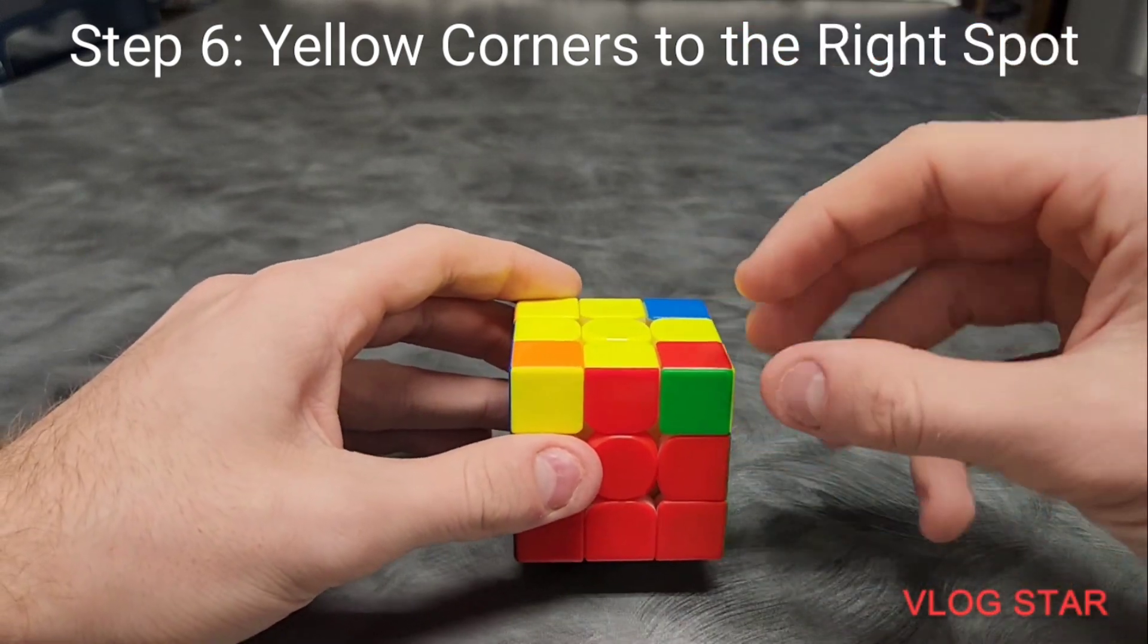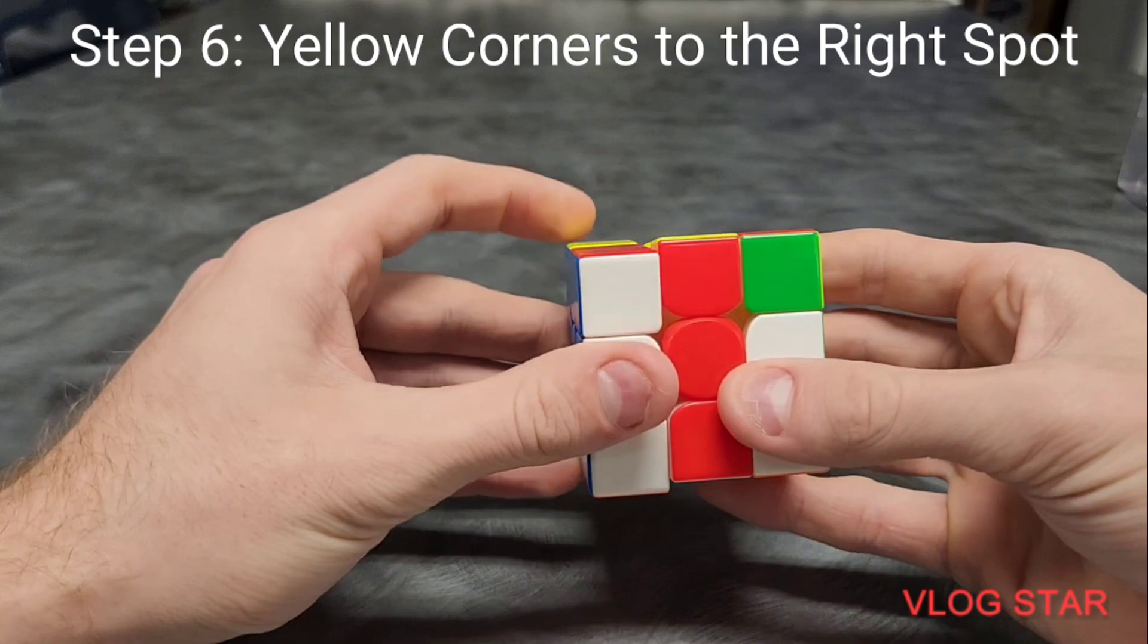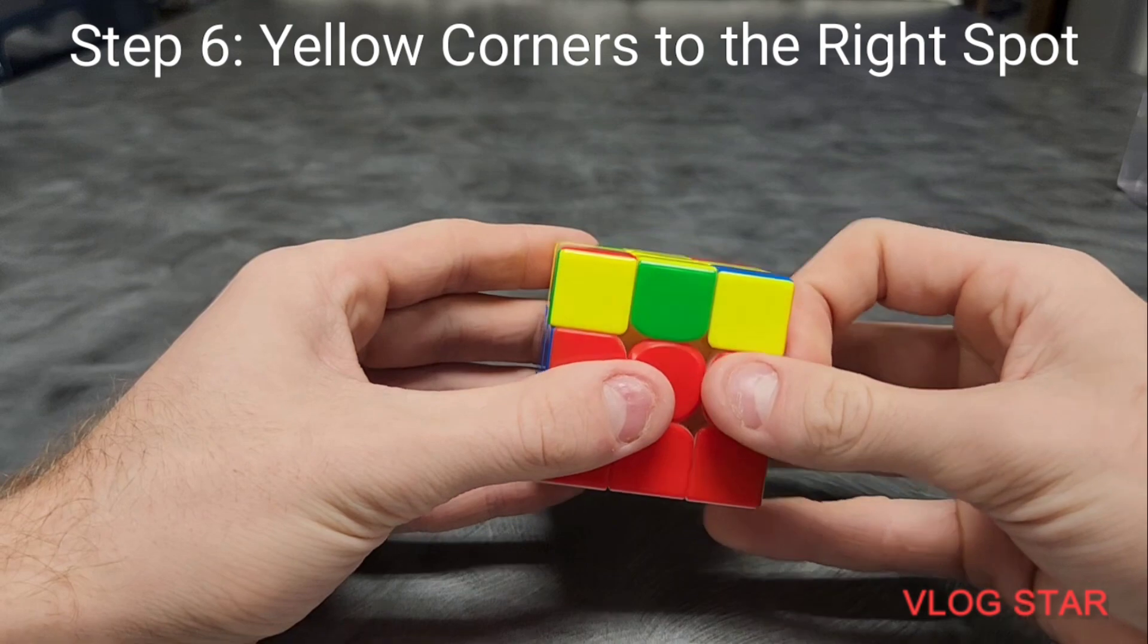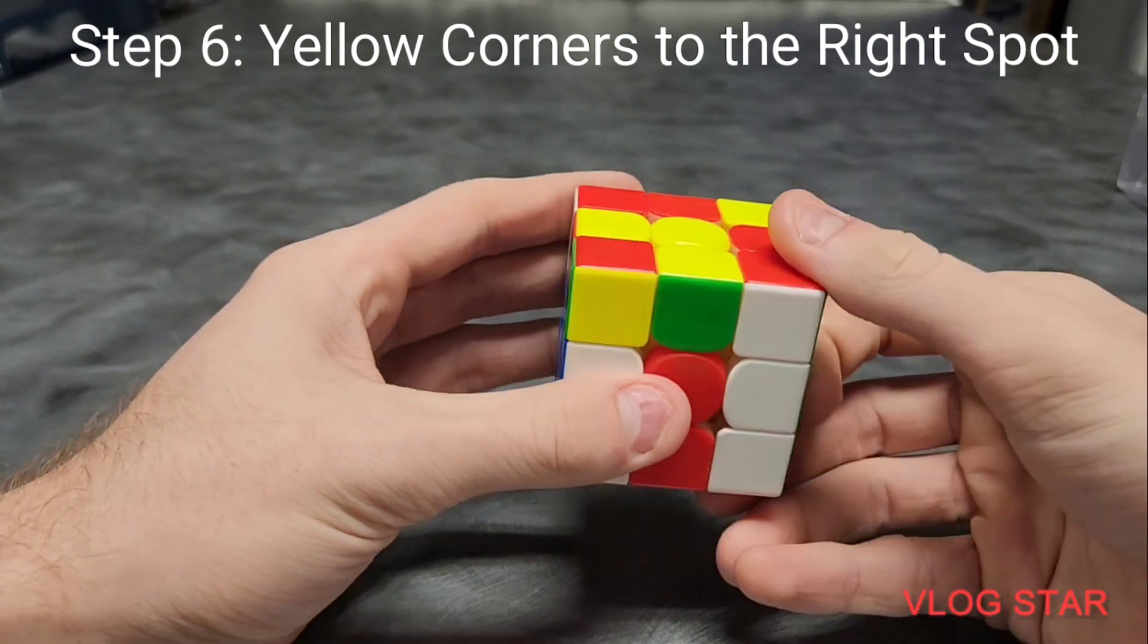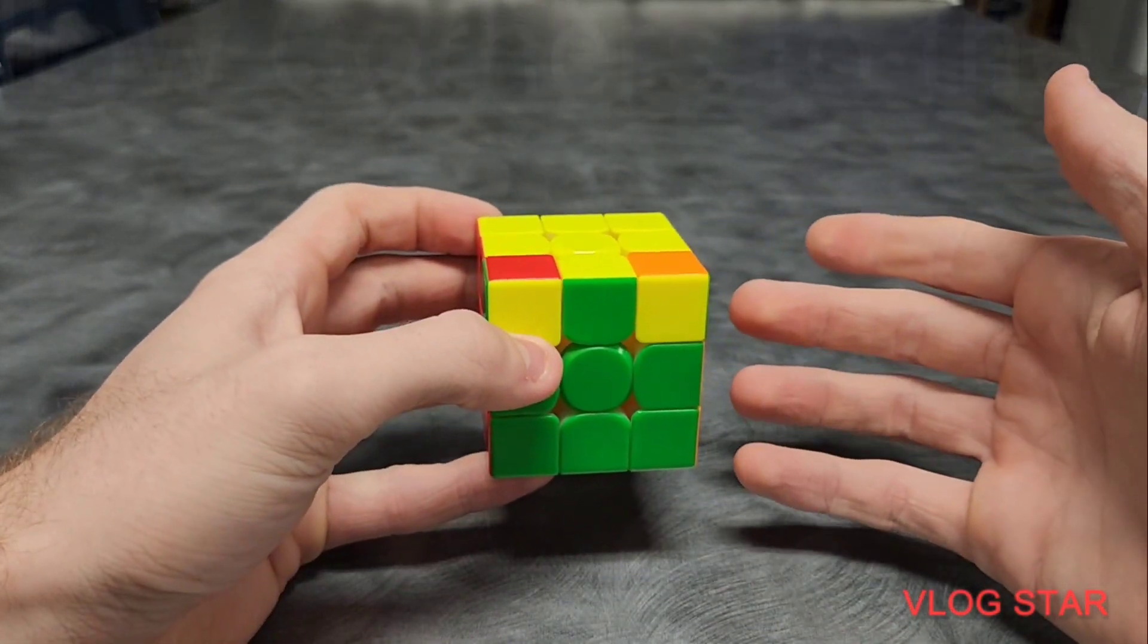When you get the one, you're going to put it to the front right like this. And then you're going to do algorithm 6. You're going to check and see if your corners are in the right spots. If they're not, do it again. And then, they should end up being in the right spots.